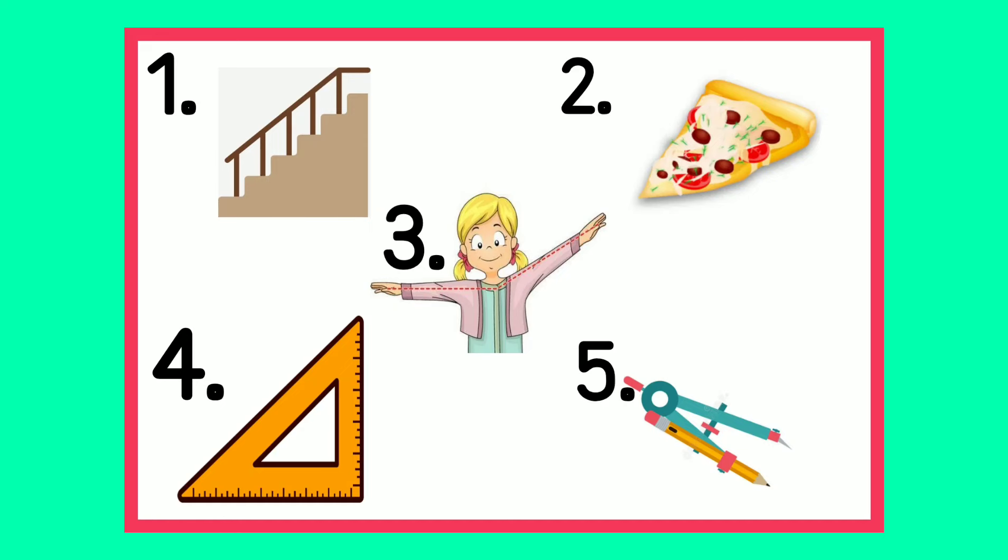How about this activity? Identify the kind of angle represented by each of the following figures. The first one is the stairs. Very good. It's a right angle. How about this pizza? Yes, it's an acute angle.